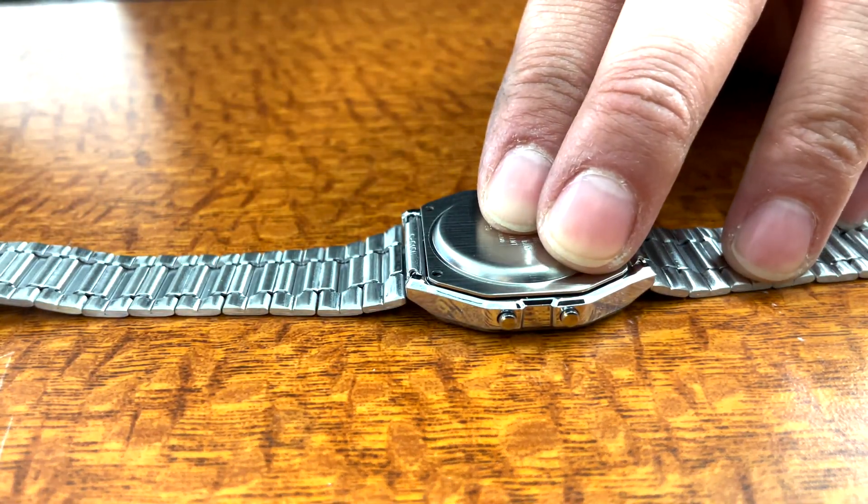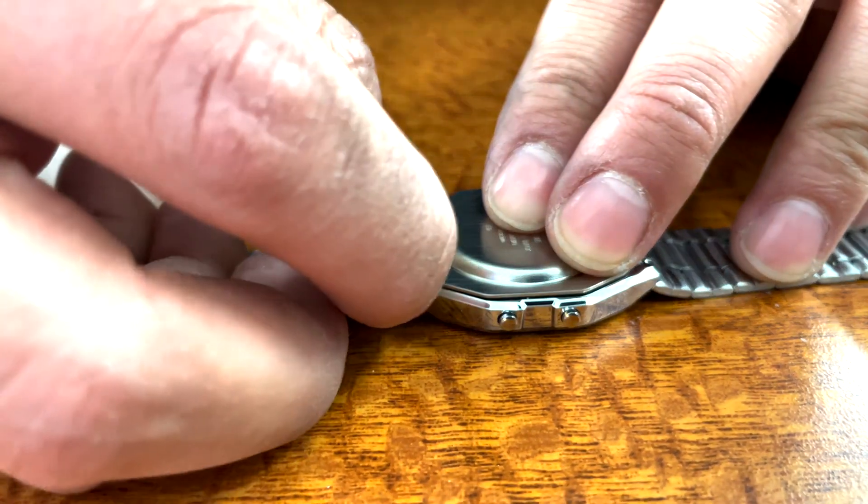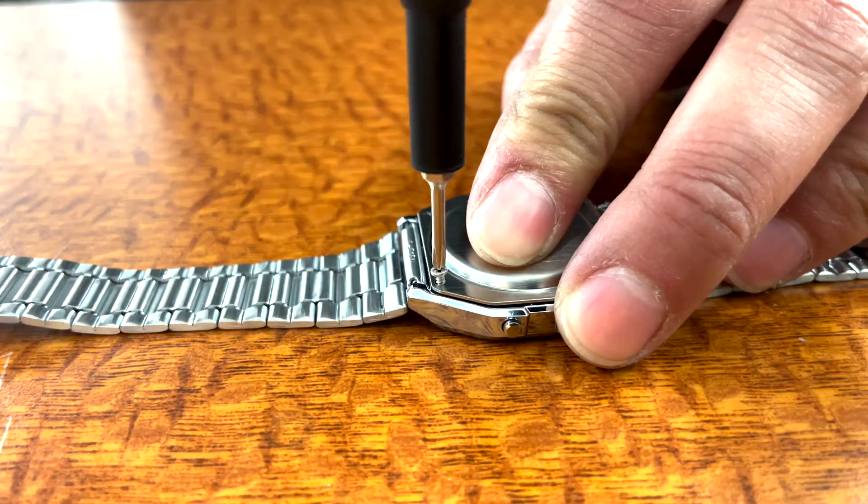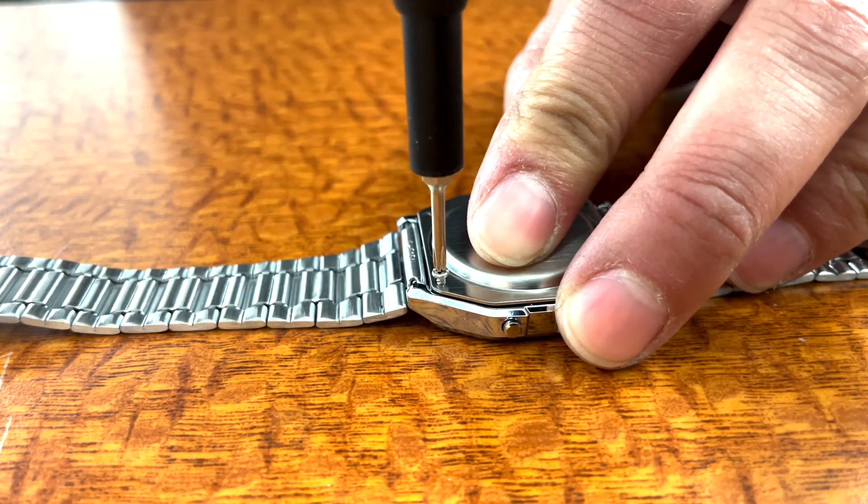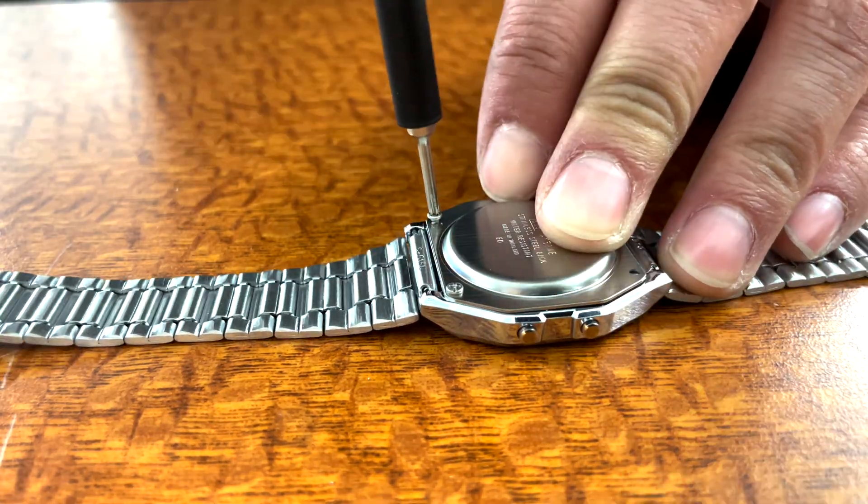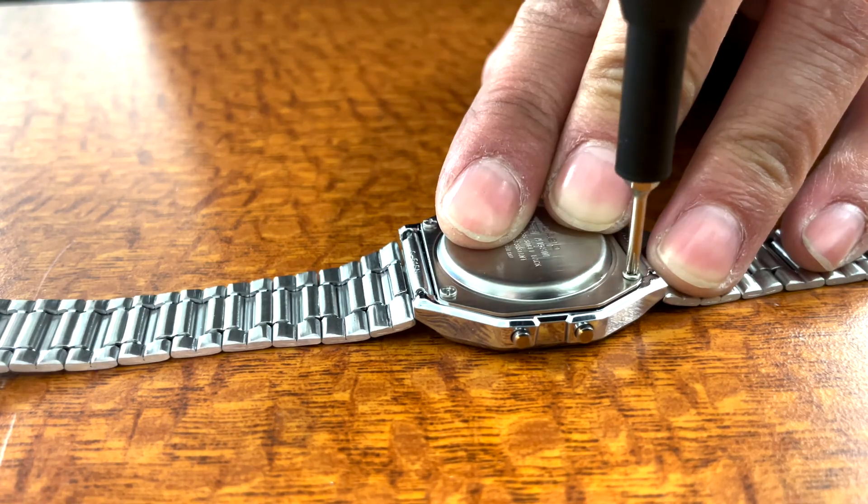Fit the metal backplate onto the back of the watch, and then replace each of the four Phillips head screws that hold on the backplate. Take care that each of these screws goes in straight and is adequately tightened, as both the screws and the rubber gasket are crucial to the water resistance of the fully assembled watch.